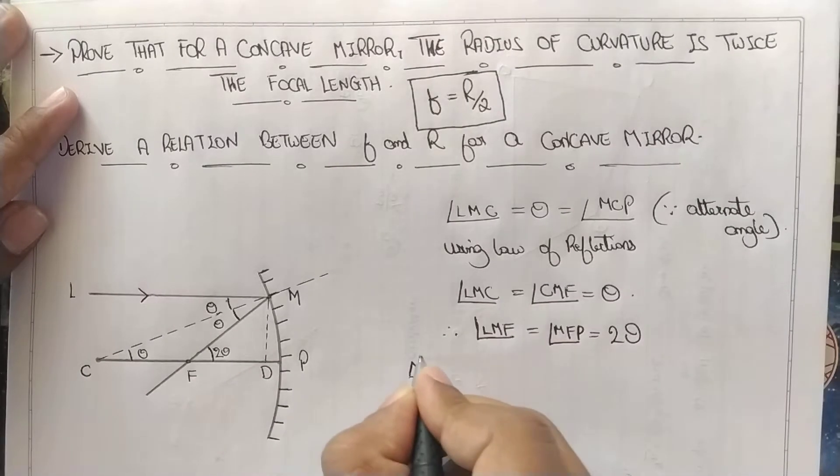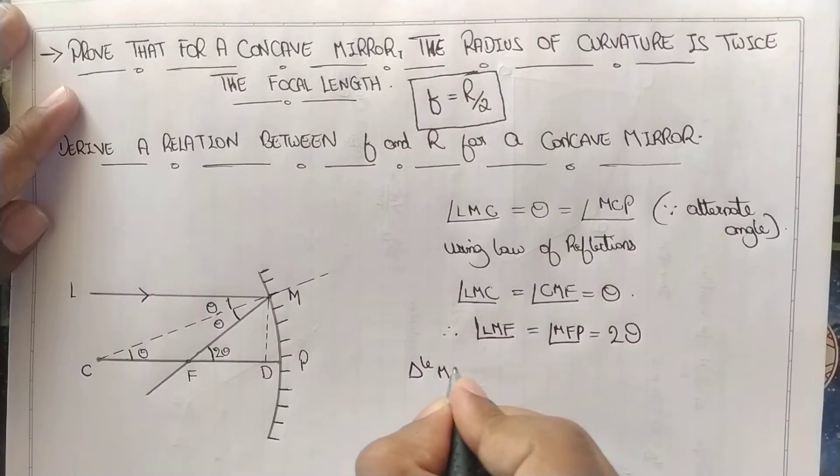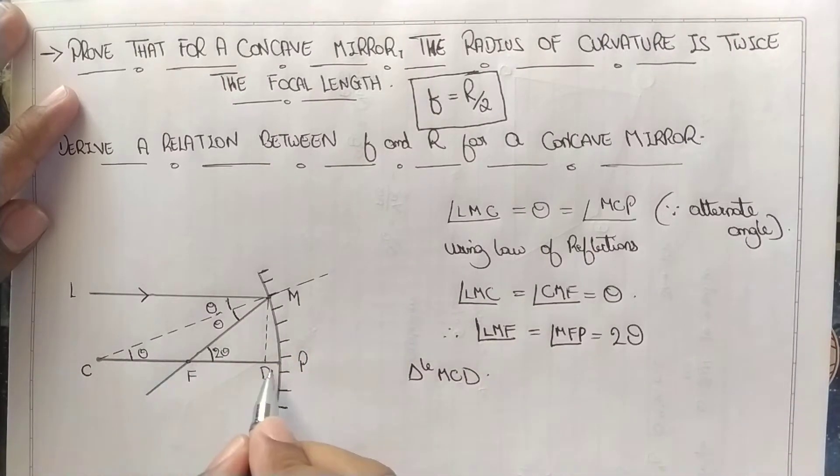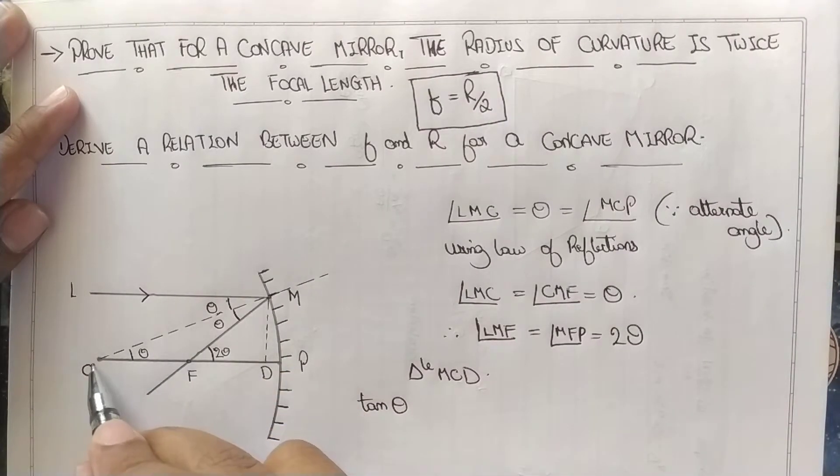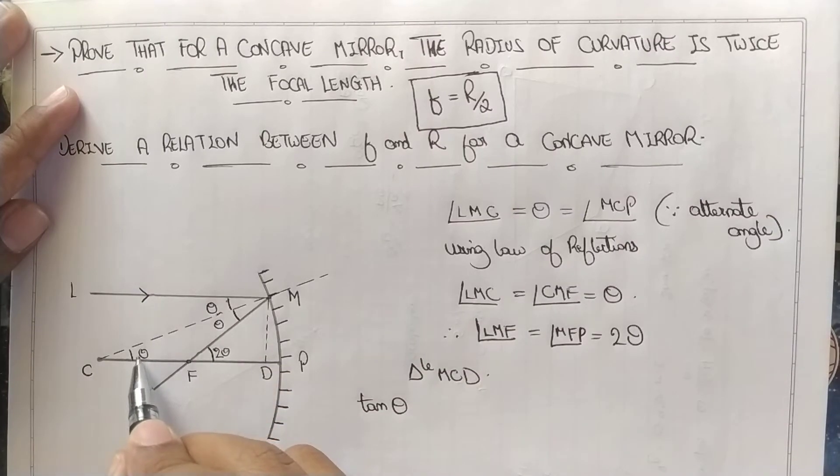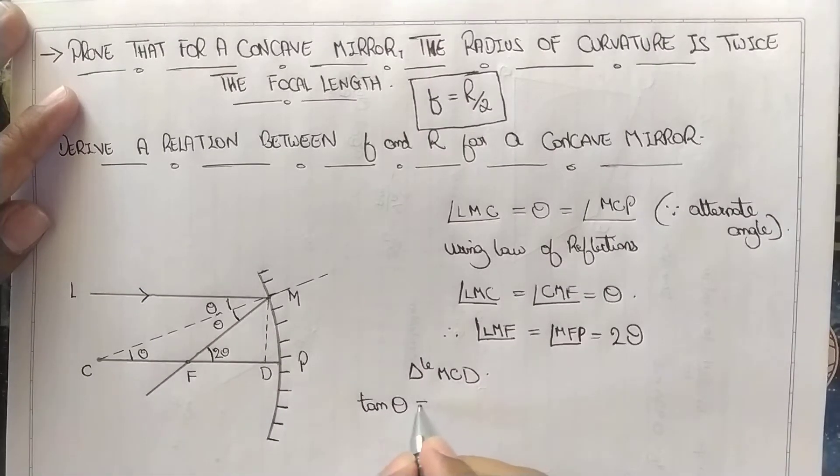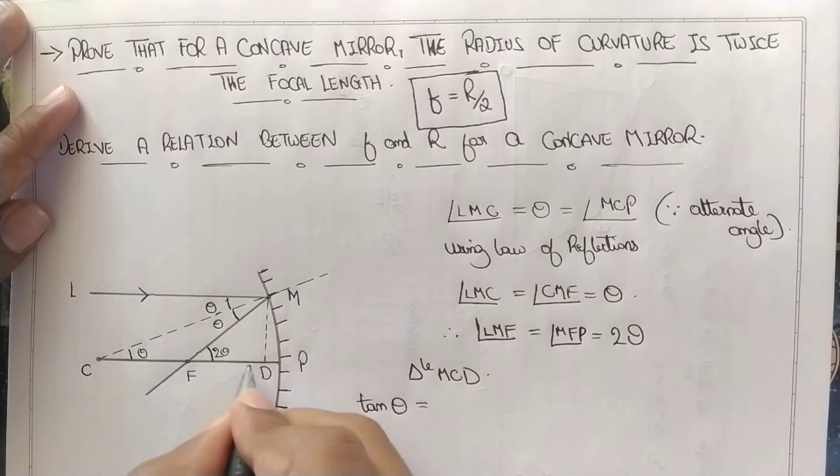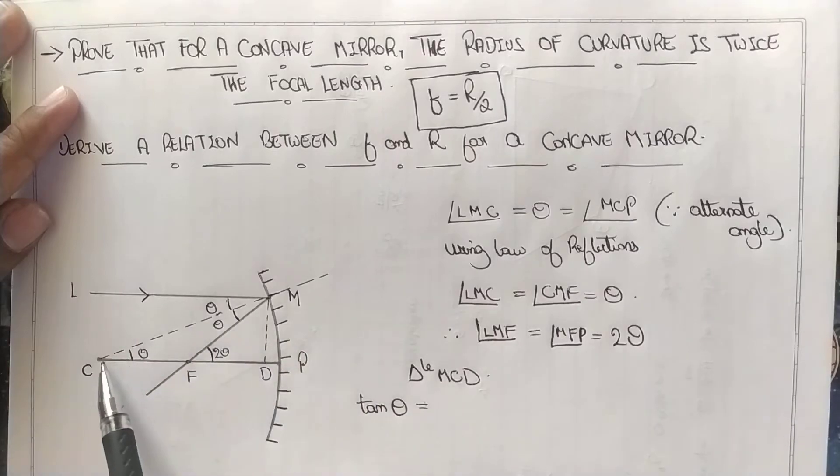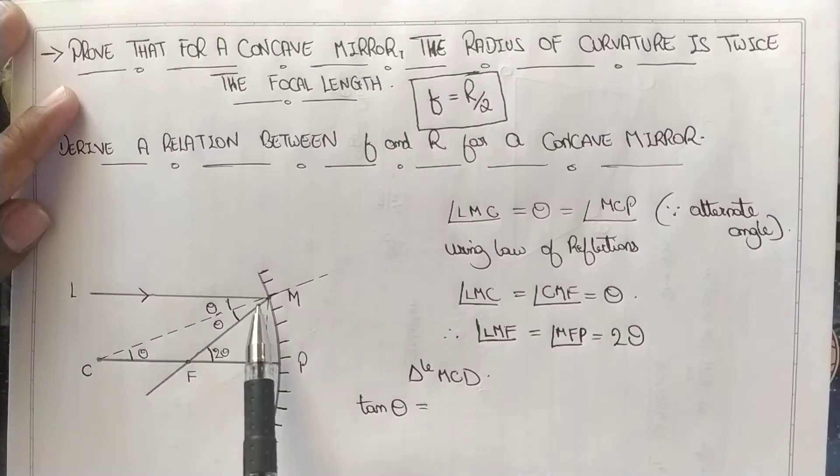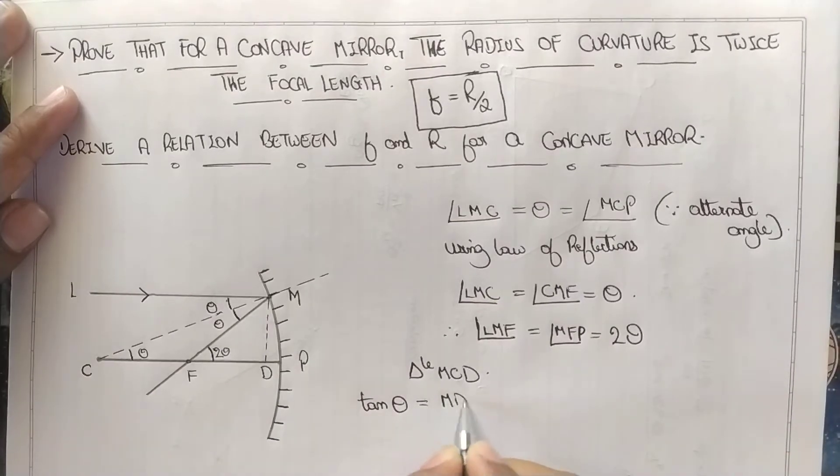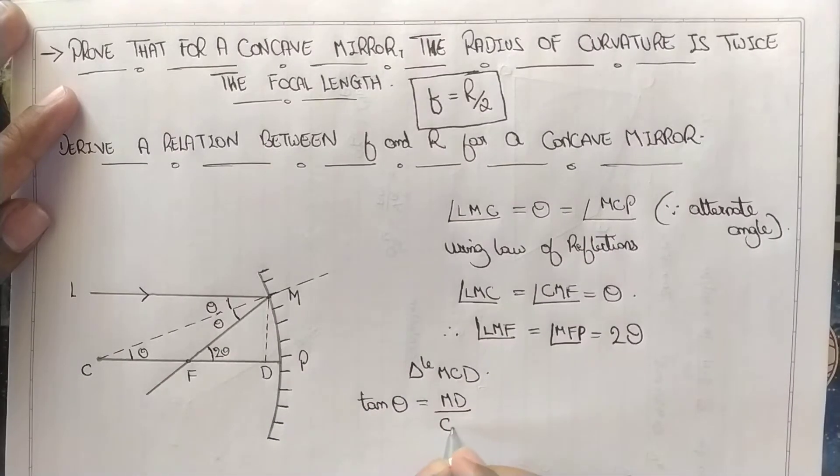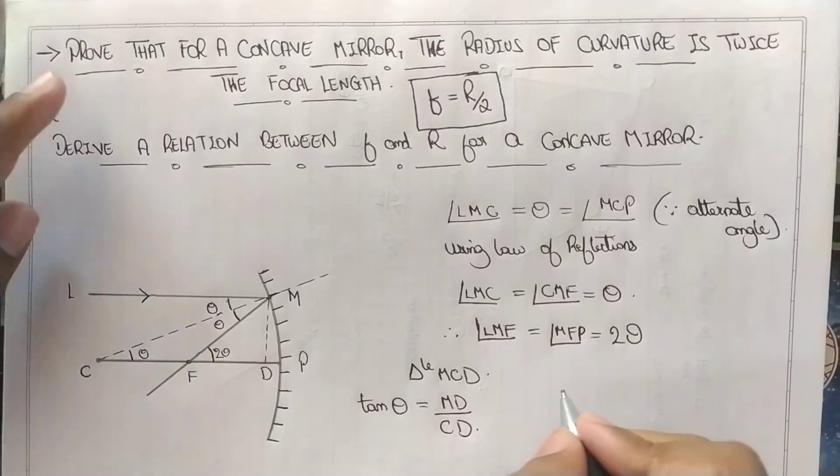Now from triangle MCD, we can write tan theta. MCD has theta here. Tan theta is opposite by adjacent. We are considering triangle MCD. The opposite here is MD divided by adjacent CD. I hope it is crystal clear.